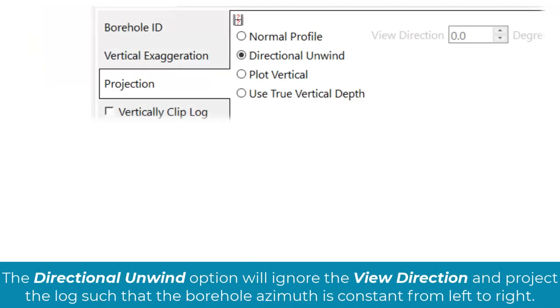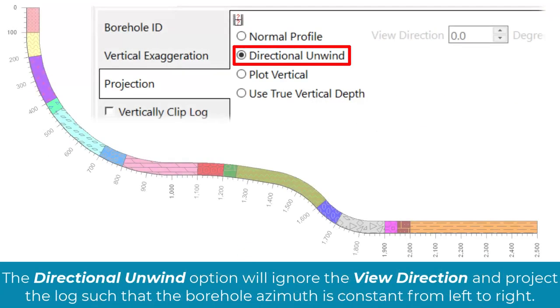The directional unwind option will ignore the view direction and project the log such that the borehole azimuth is constant from left to right.